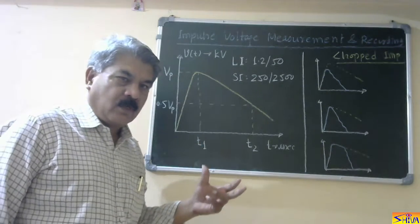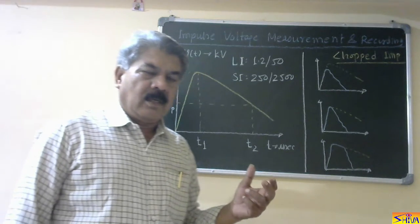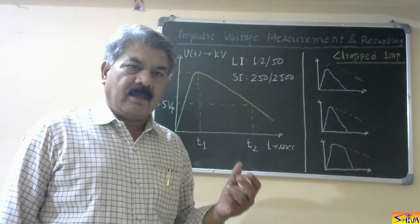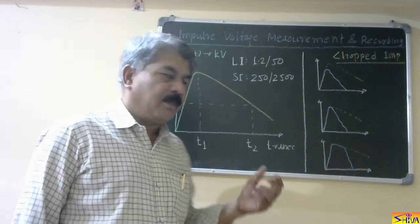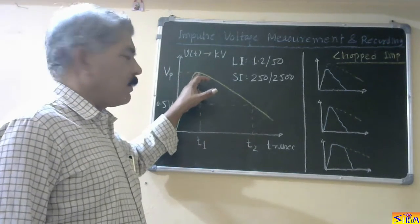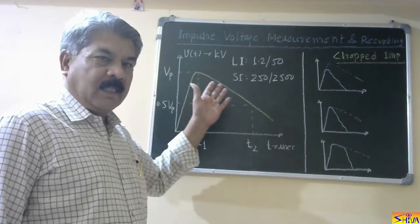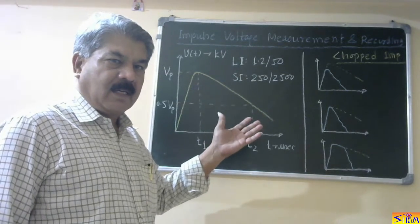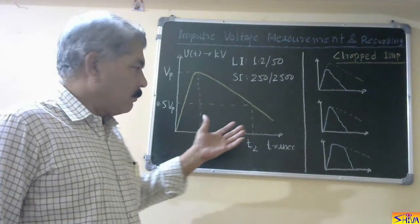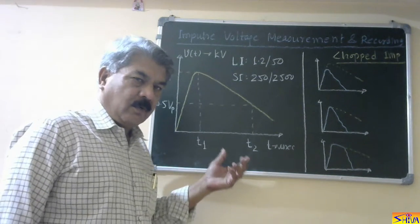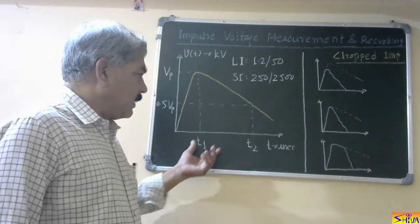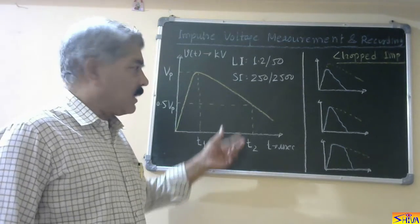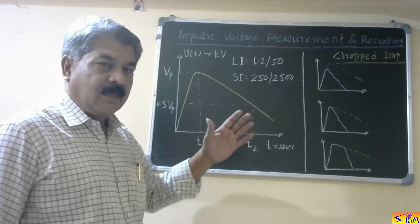Now, this is a one-shot voltage. So, only measurement will not be sufficient because when we measure, we can know how much was the peak value. This we can know by the peak reading voltmeter, sphere gap arrangement, or potential divider also. But we will not come to know whether it is as per standard or not. We require the wave as per standard with certain tolerances.